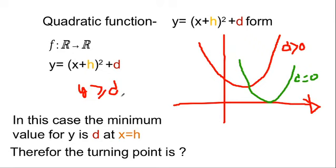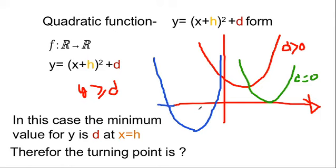When d is negative, the minimum value is below the x-axis, so the graph cuts the x-axis at two points — you will have two roots. So: d less than zero gives two roots; d equals zero gives one root; d positive gives no roots. This is how we relate the graphical representation to the type of roots obtained.